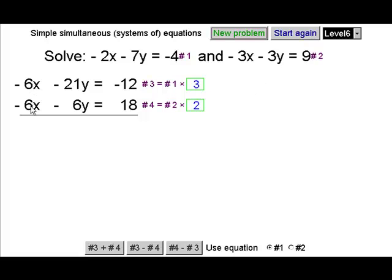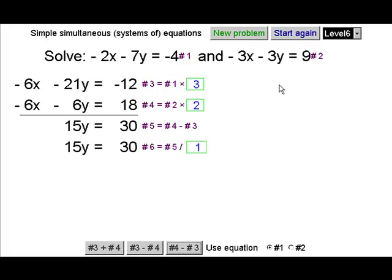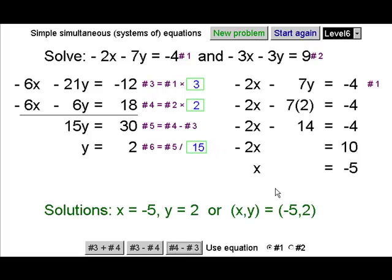Now, well, look, we've got negative 6 in both places. We'll get rid of that by subtracting. Once again, it doesn't really matter which way round we subtract. Let's take the top away from the bottom this time. And we've got a fairly simple equation which we can divide through by 15 to get y. And that leads on to x in the usual way.